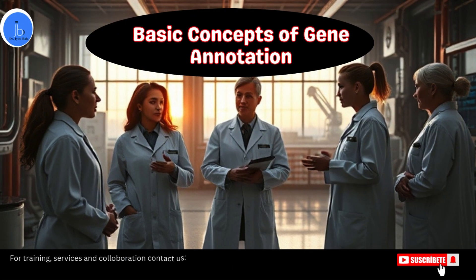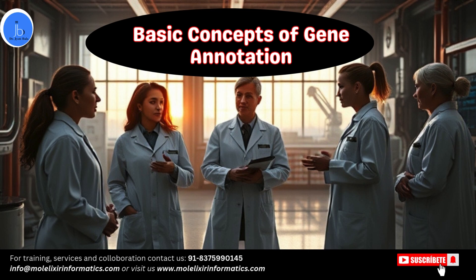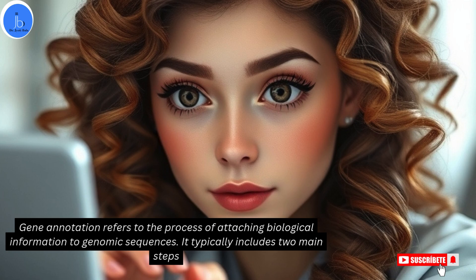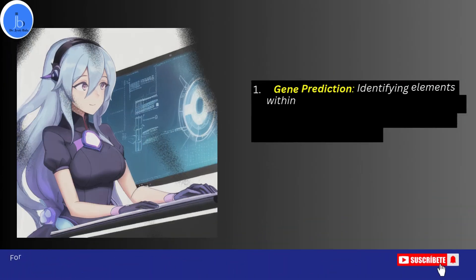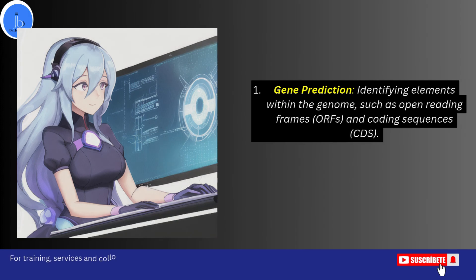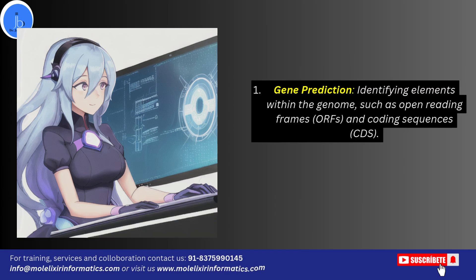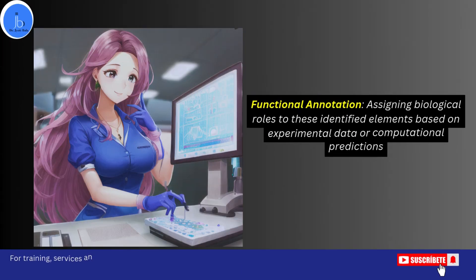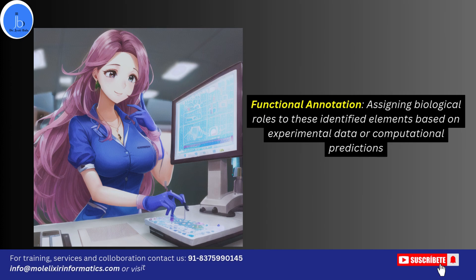These are some of the basic concepts of gene annotation. Gene annotation refers to the process of attaching biological information to genomic sequences. It typically includes two main steps: one is gene prediction — identifying elements within the genome such as open reading frames (ORFs) and coding sequences (CDS); and the other is functional annotation — assigning biological roles to these identified elements based on experimental or computational predictions.